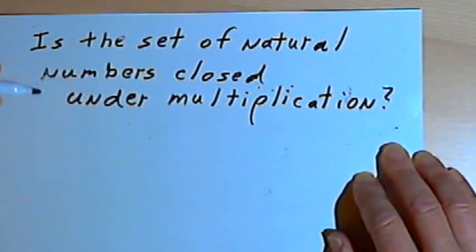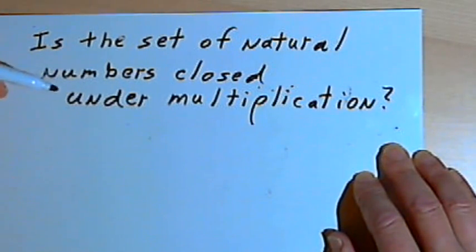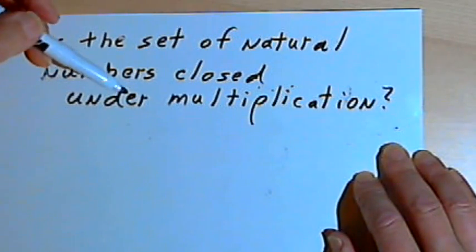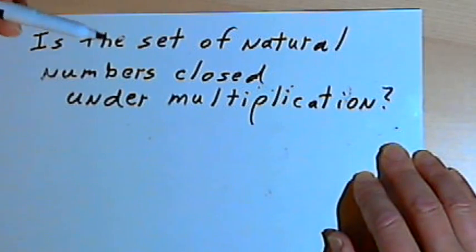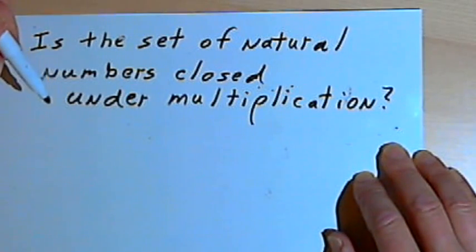So the first thing I might want to do is just try multiplying a couple of random natural numbers, like 4 and 3, and see if I get a natural number. So 4 times 3 is 12. 5 times 8 is 40. So it seems like there's a chance this could work.